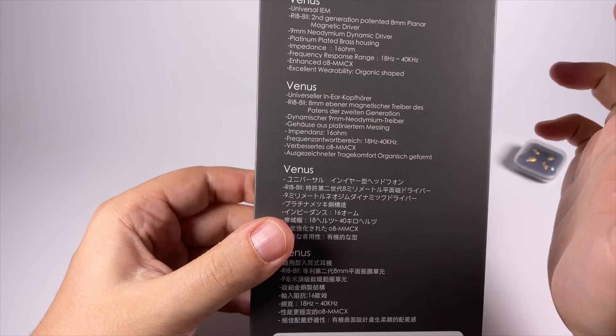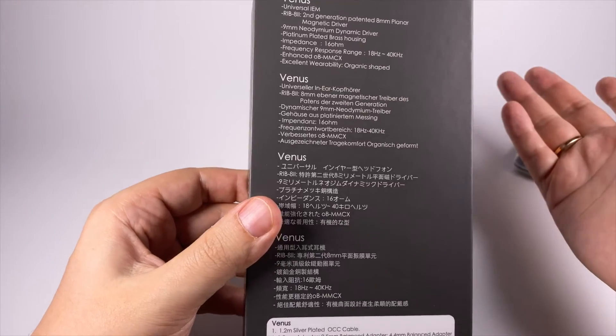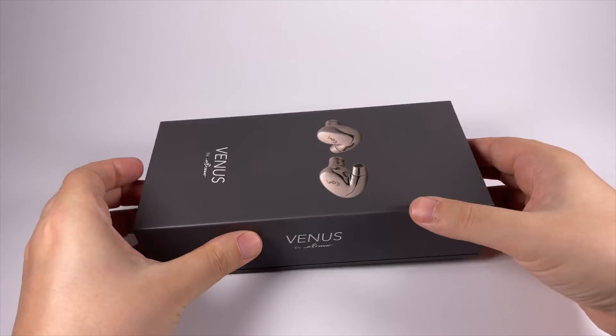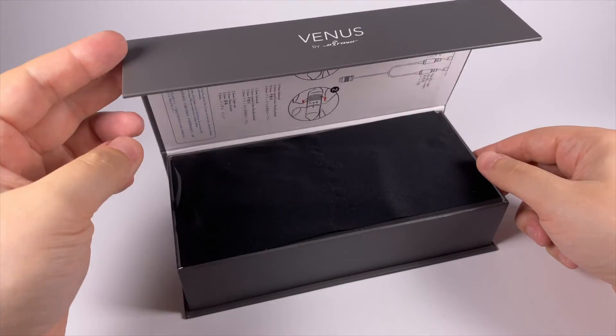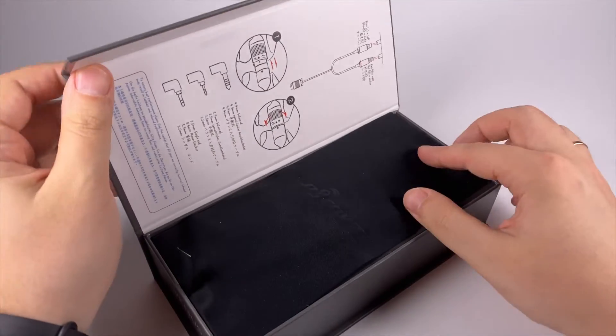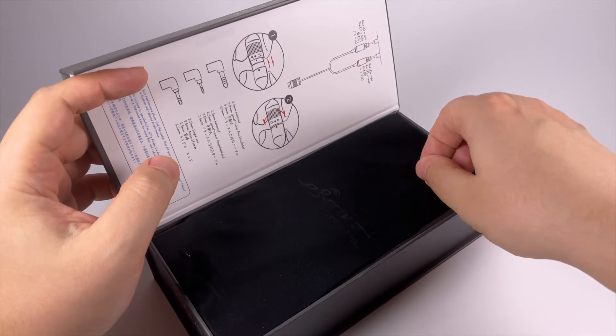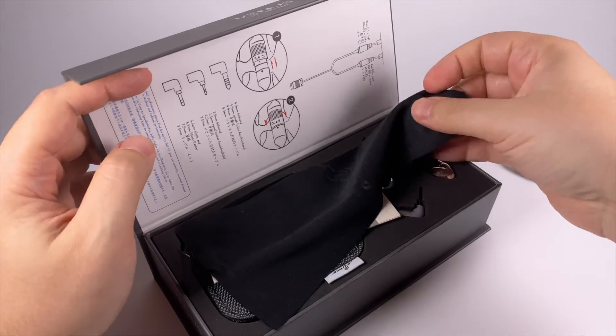Basic information: 16 ohms of impedance, so pretty low impedance ones. And inside of the box everything screams about the quality and premium segment. So they have that piece of cloth covering them.